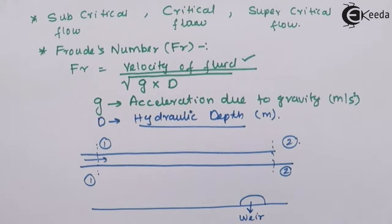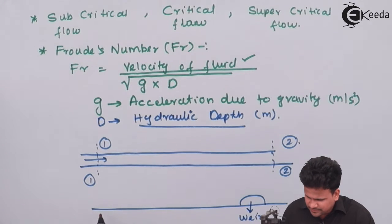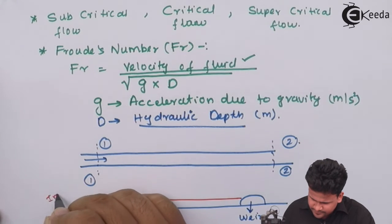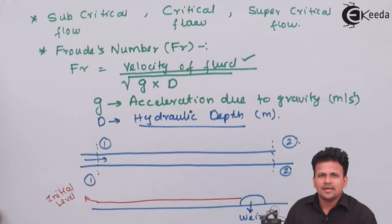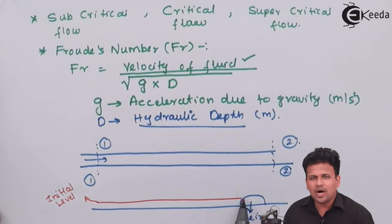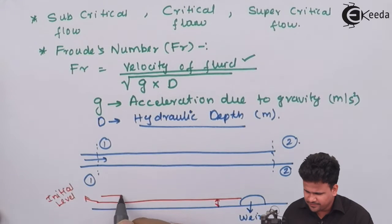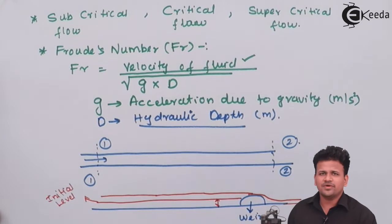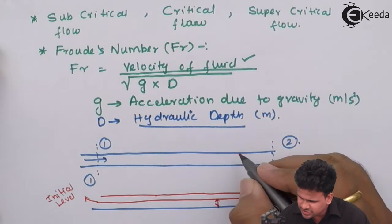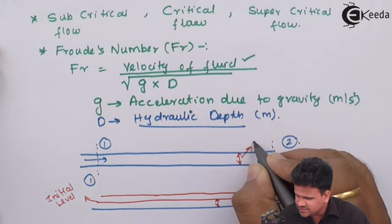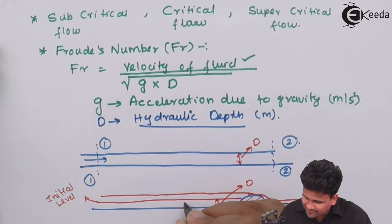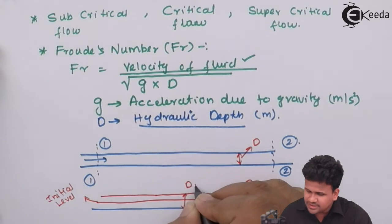What does this weir do? Initially, the entire fluid was at a certain level, called the initial level. As the fluid needs to flow ahead but is blocked, this level rises. After a while, when it reaches the maximum height, it flows over the weir and continues forward. The initial level can be considered as depth D, but once the weir is introduced, the level increases to a value D1.